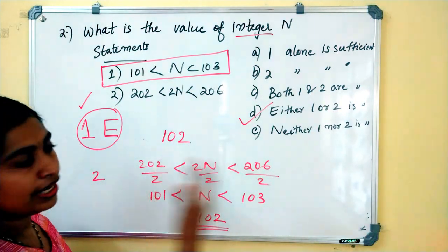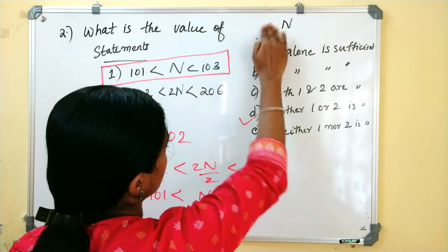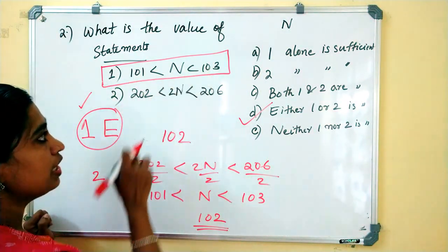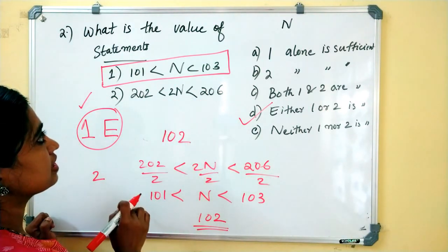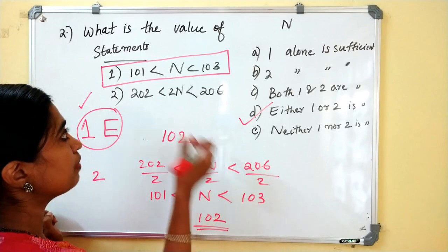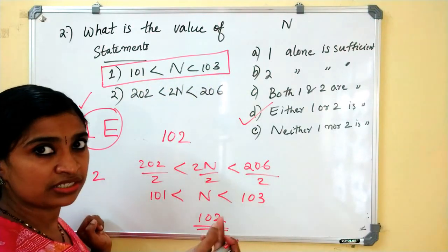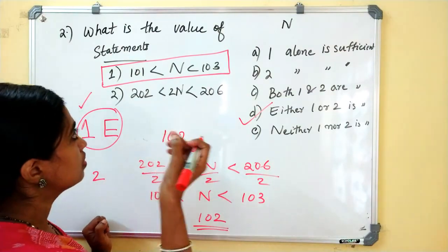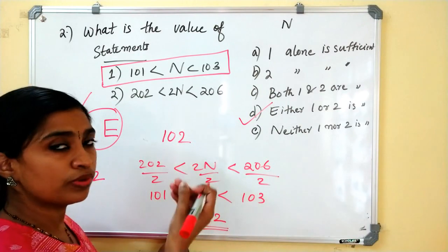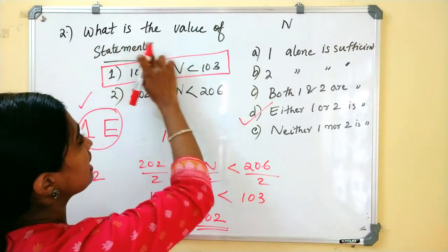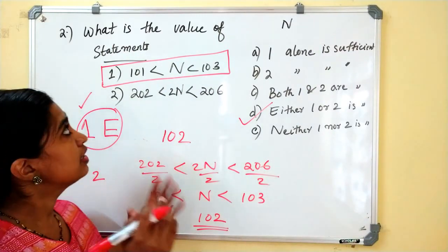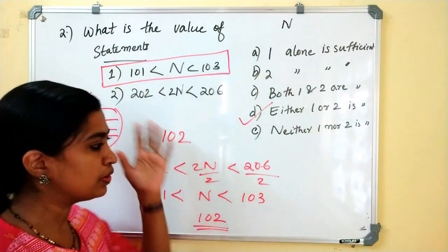From this question we can also form another question. If the word 'integer' is not present and we are asked to find the value of N, then we cannot say that the value of N is 102, because N can be any number between 101 and 103 — it can be fractions like 101.1, 101.2, and so on. The second option also gives the same range. So if the question is just 'what is the value of N?', the answer would be: neither one nor two is sufficient. But since the question asks for integer N, we are able to solve it.